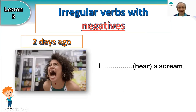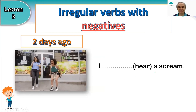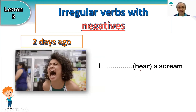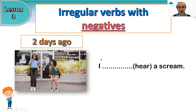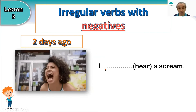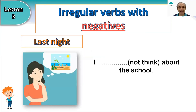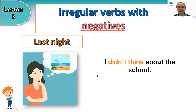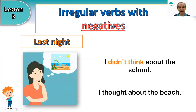I made a cake. Two days ago — we have a scream and the verb hear. So two days ago, I heard a scream. And last night — look at the picture — think about school? No, not think about school. So to make the sentence: last night, I didn't think about school. I thought about the beach.